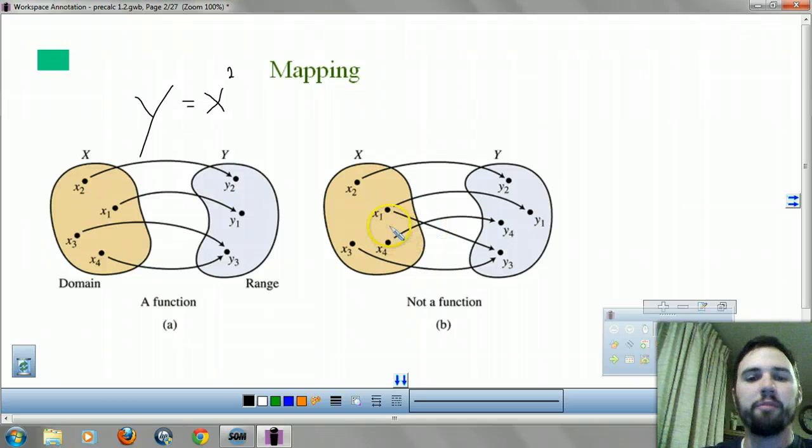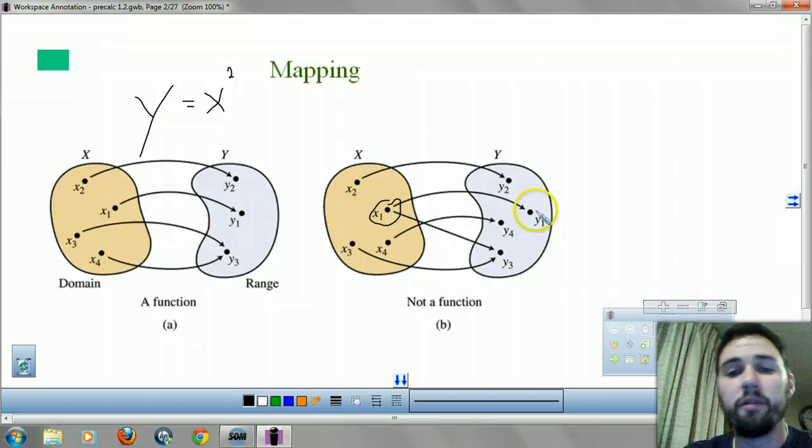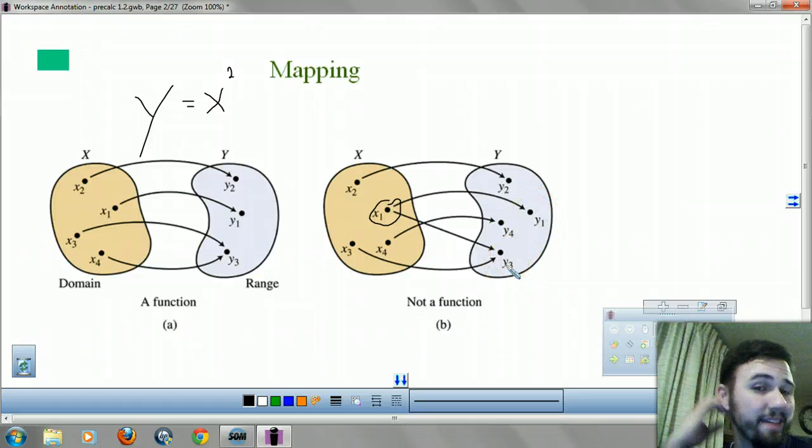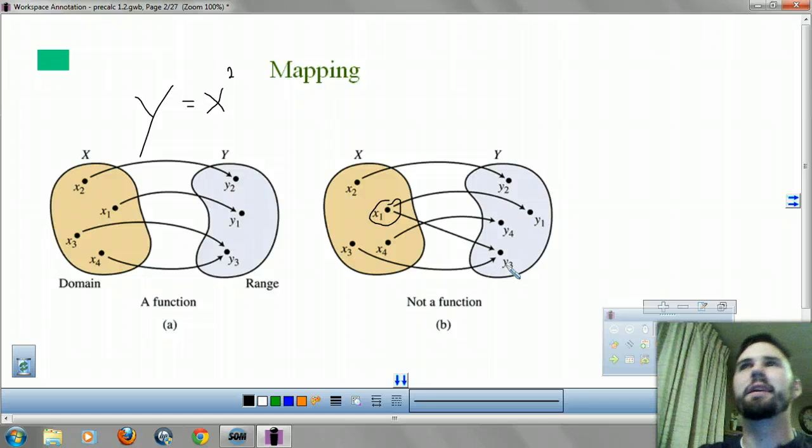What makes something not a function is if you plug in an X and you can either get Y1 or Y3. If you plugged in one for X squared and you could get two solutions, that wouldn't make it a function. A function means it goes one X gives you one distinct Y.